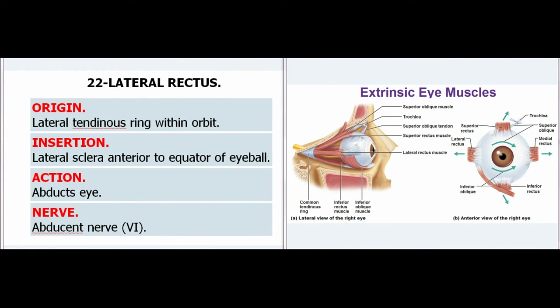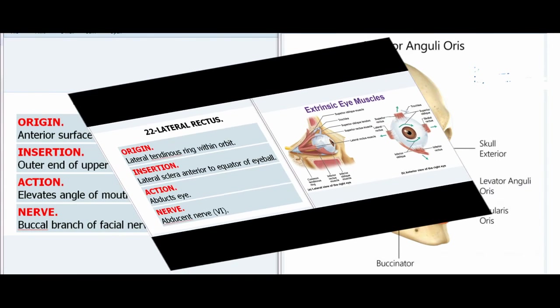22. Lateral Rectus. Origin: Lateral tendinous ring within orbit. Insertion: Lateral sclera anterior to equator of eyeball. Action: Abducts eye. Nerve: Abducent nerve (VI).